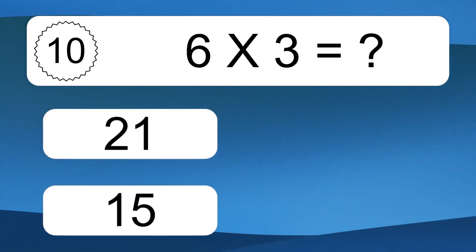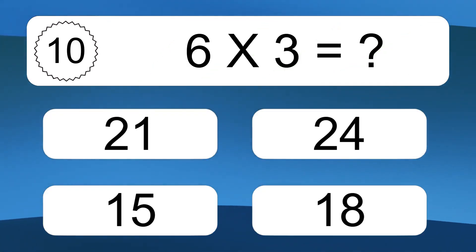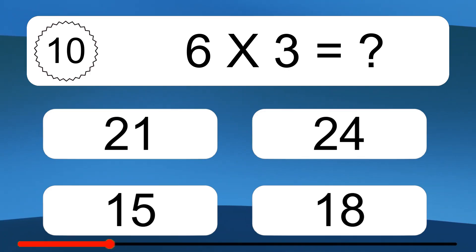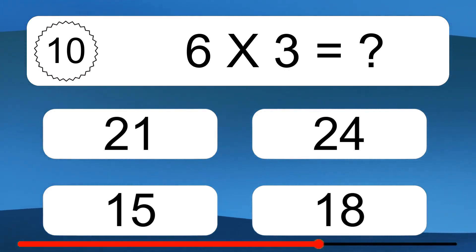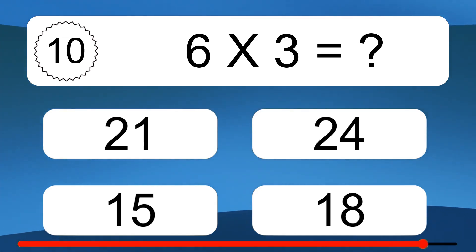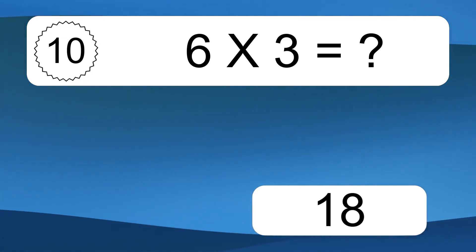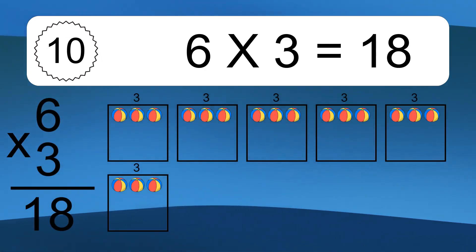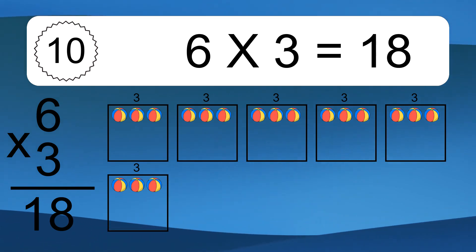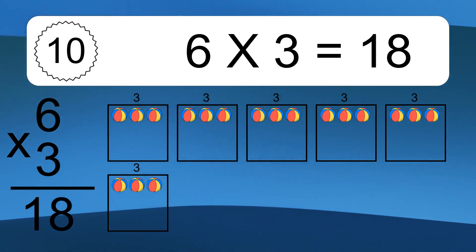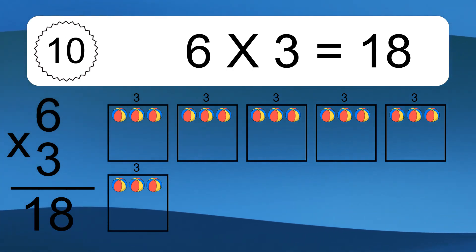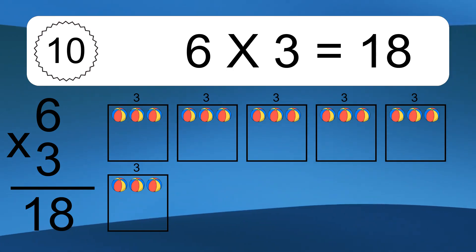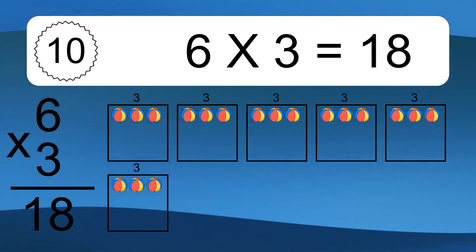6 times 3 equals what? We have 6 boxes and each box has 3 colorful balls inside. If you count all the balls in all the boxes together, you will have 6 times 3 balls. This equals 18 balls.